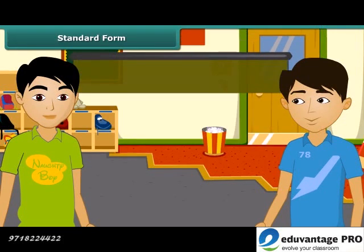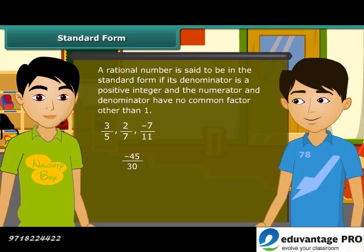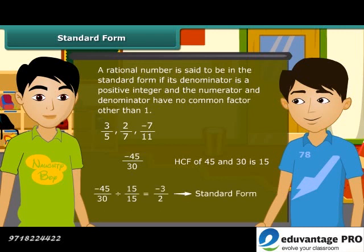A rational number is said to be in the standard form if its denominator is a positive integer and the numerator and denominator have no common factor other than 1. These rational numbers are in the standard form because their numerator and denominator have no common factor other than 1. If the numbers are not in the standard form, they are reduced by dividing the numerator and denominator by their HCF. For example, minus 45 by 30 is not in standard form; the HCF of 45 and 30 is 15, so we divide both by 15 and get minus 3 by 2, which is in standard form.